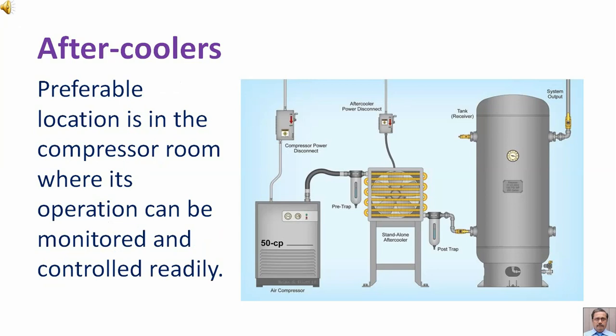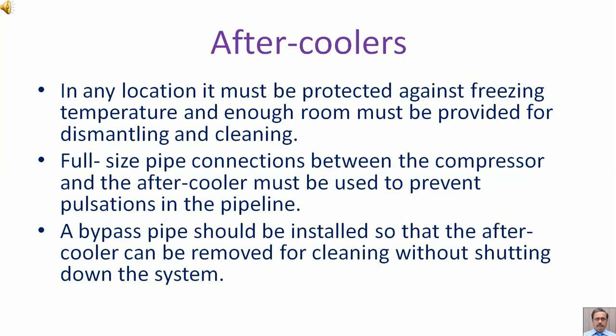The preferable location is in the compressor room where its operation can be monitored and controlled readily. In any location it must be protected against freezing temperature and enough room must be provided for dismantling and cleaning. Full-size pipe connections between the compressor and the aftercooler must be used to prevent pulsations in the pipeline. A bypass pipe should be installed so that the aftercooler can be removed for cleaning without shutting down the system.